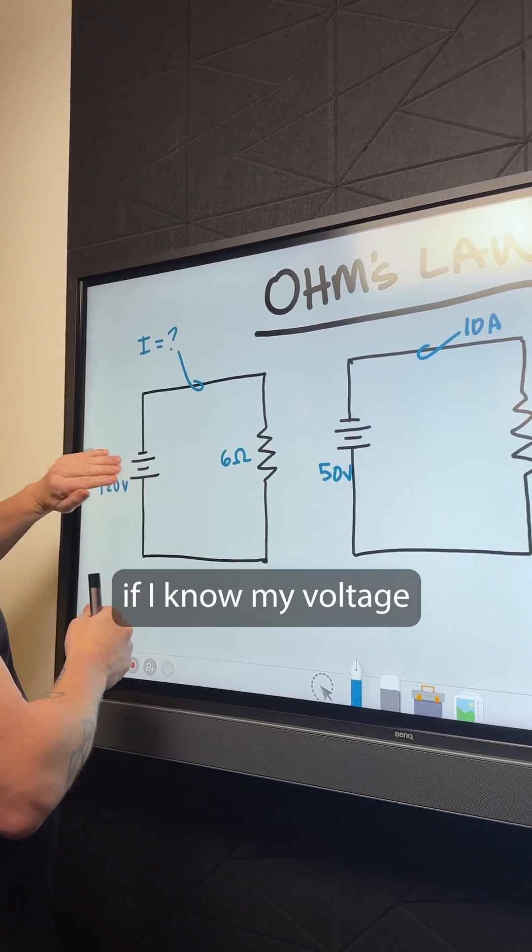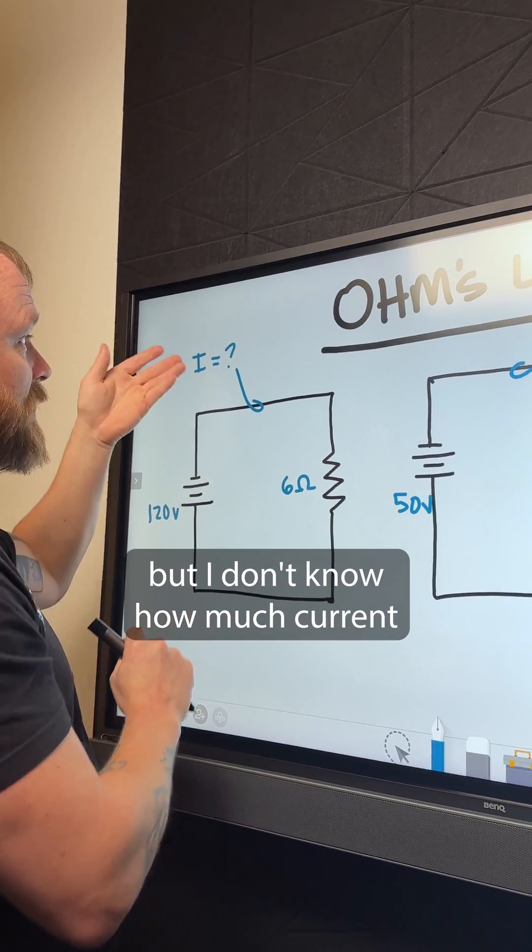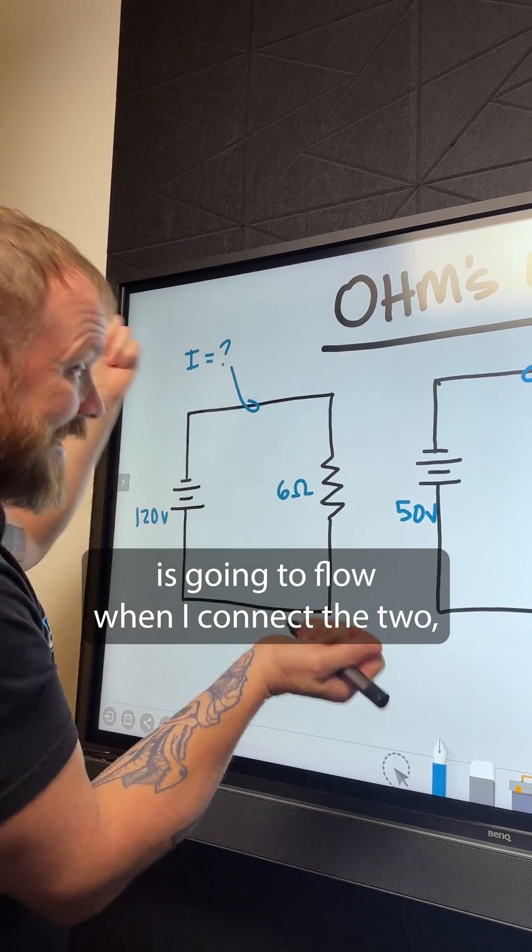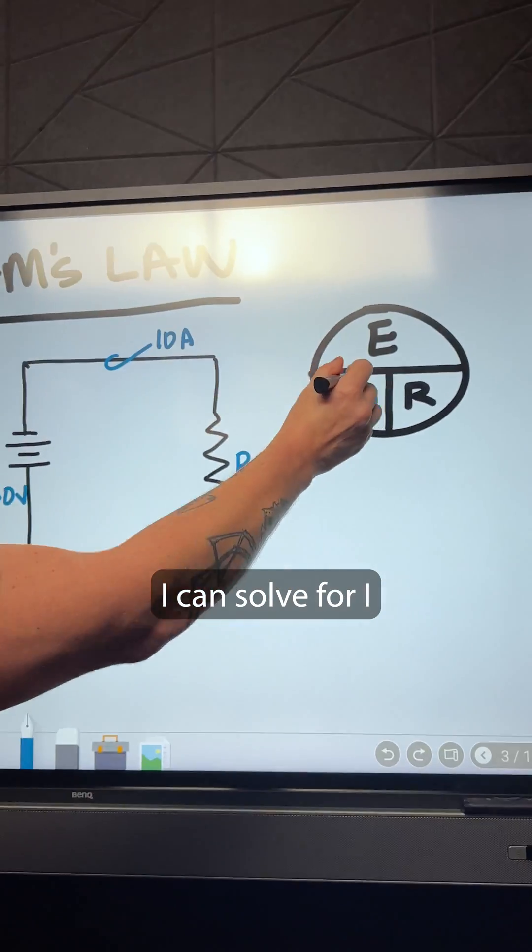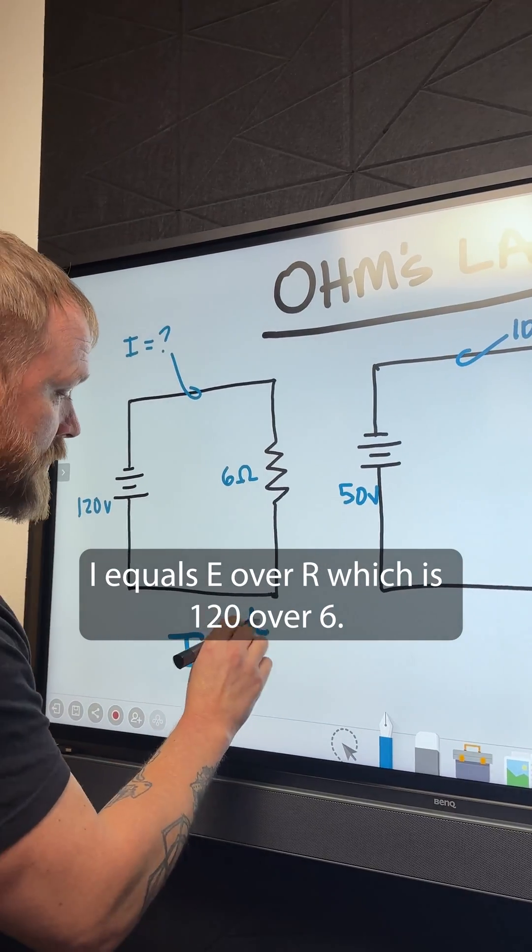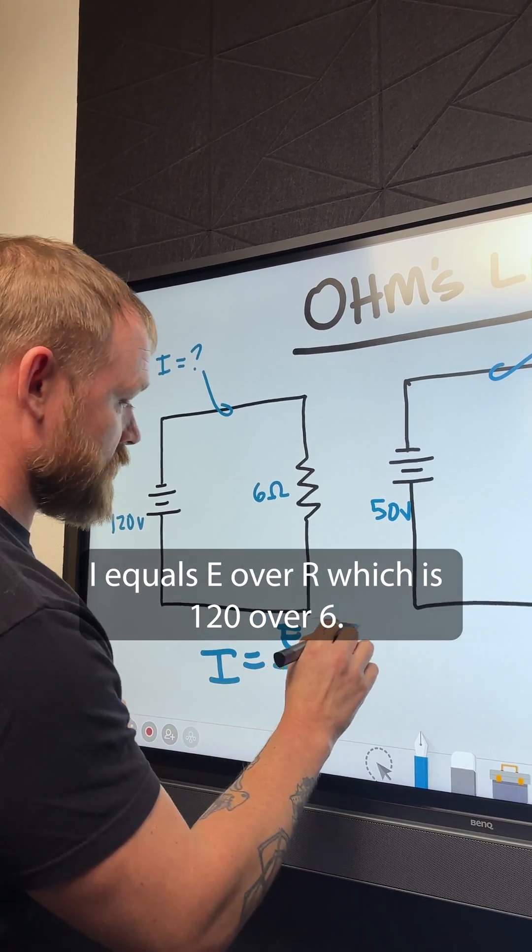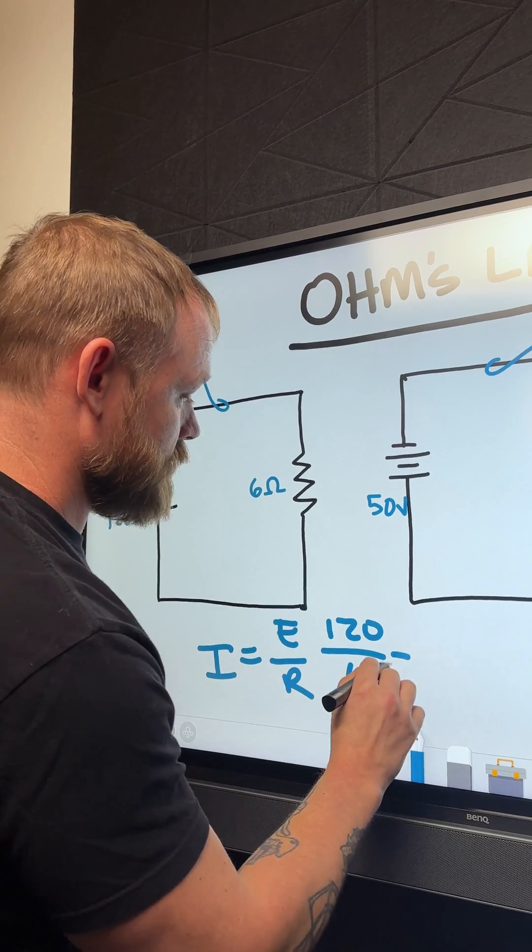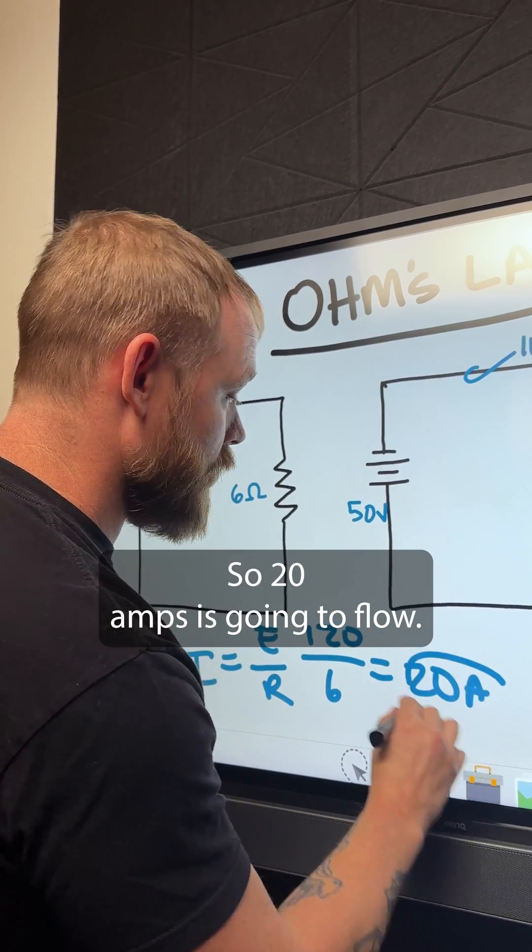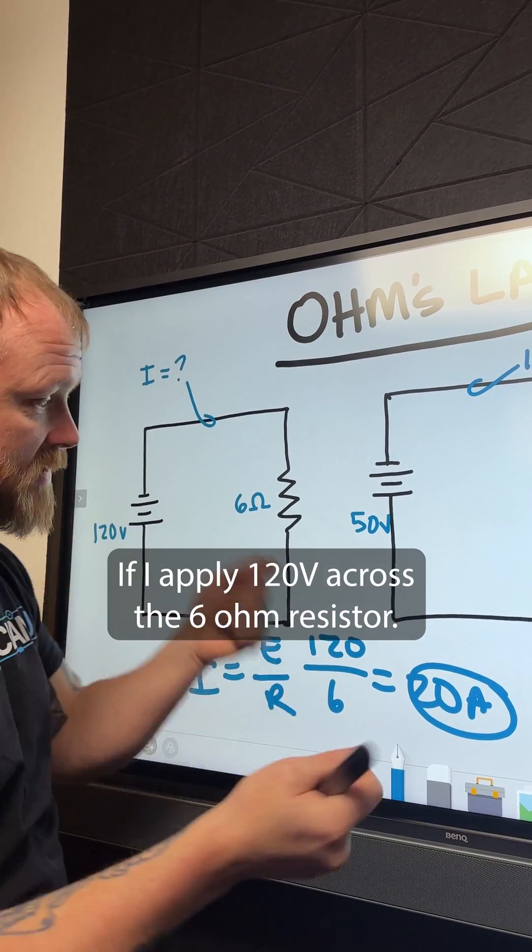So with these two circuits, if I know my voltage and I know my resistance, but I don't know how much current is going to flow when I connect the two, I can solve for I. I equals E over R, which is 120 over 6. So 20 amps is going to flow if I apply 120 volts across the 6-ohm resistor.